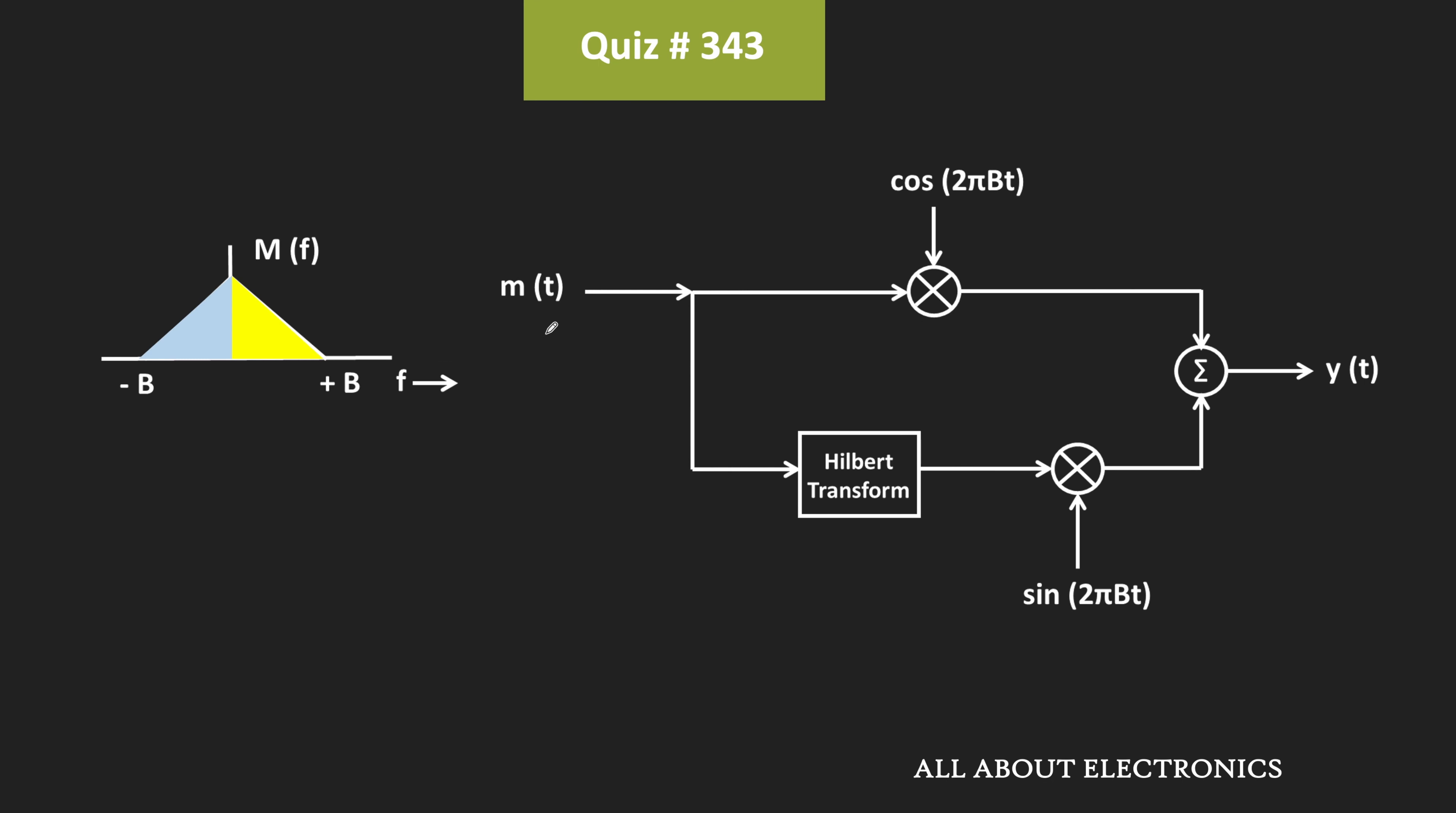As you can see, this signal MT at one end is passed through the Hilbert transform, while at the other end, it is being multiplied with the cos 2πBT. So let's say this output is equal to M1T. And similarly, the output at this end is equal to M2T.